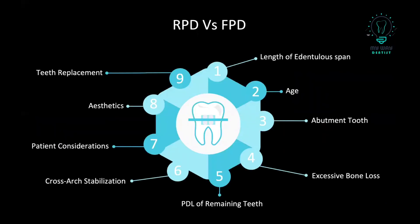If you want to compare between removable partial denture and fixed partial denture, and when we say that the RPD is better to use — here are some circumstances where we prefer removable partial denture over fixed partial denture. First, when we have a long edentulous span, we always prefer to go with the RPD, because the RPD will take support from the ridge or soft tissue, and Ante's law cannot be applied with this long edentulous span as it is needed for FPD.